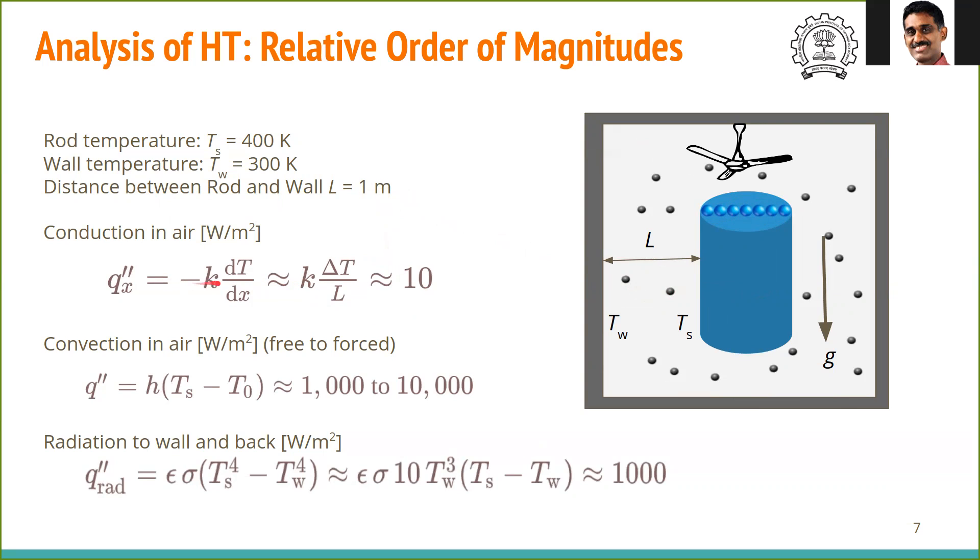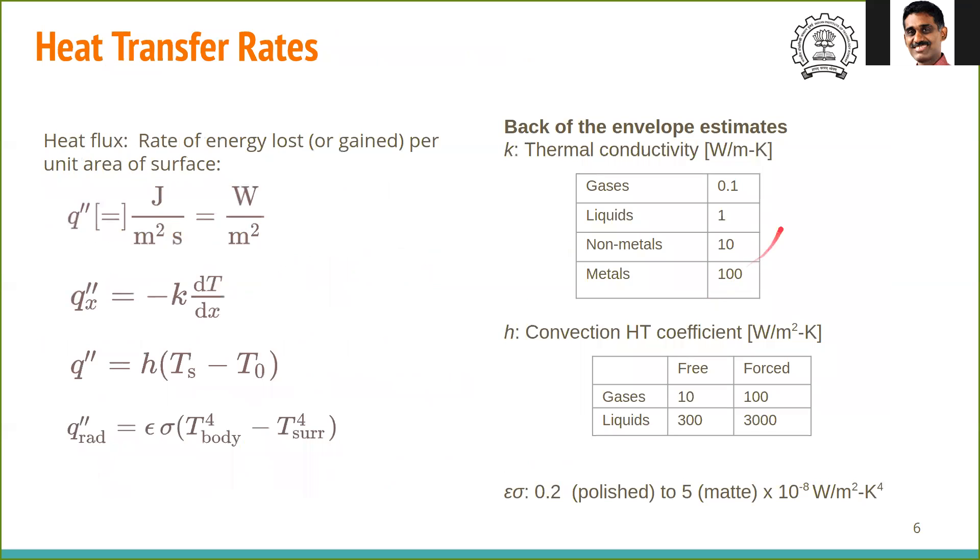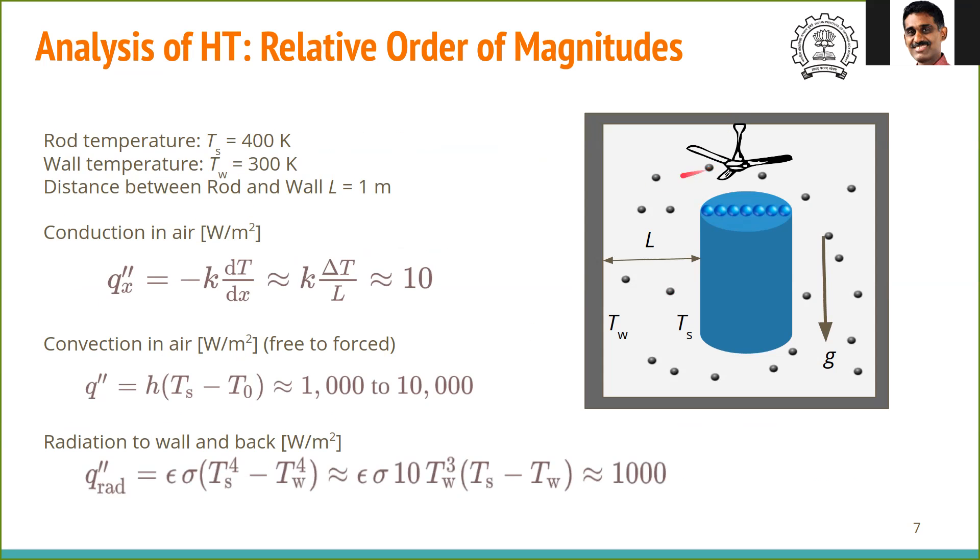So now firstly, conduction in air. So here we have conduction and convection. Conduction in the air is k times dT by dx. So dT by dx, we approximate it as k times delta T by L. So this entire gradient here, we replace it by delta T by L. Delta T is 100. L is 1. And thermal conductivity for gases is 0.1. So this q double prime x conduction, that is the rate at which heat is transferred from here to here by conduction in air is 10 units in SI, 10 watt per meter square.